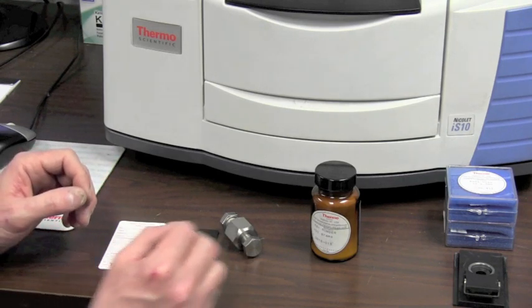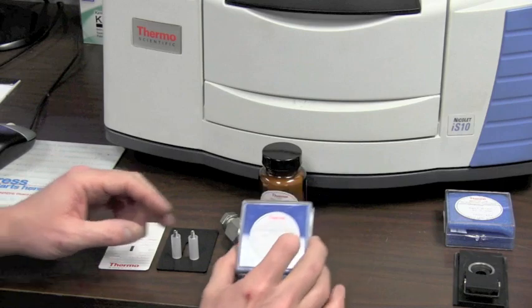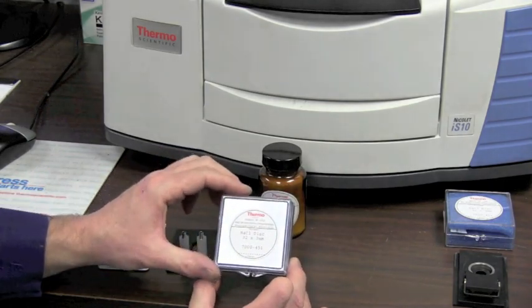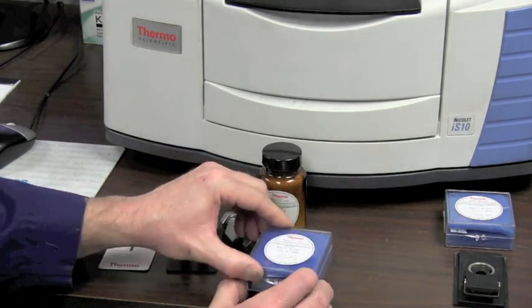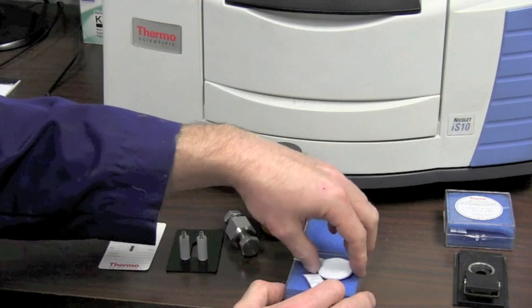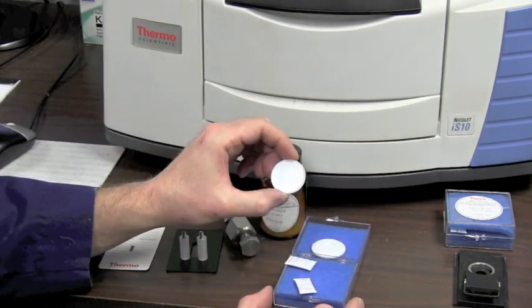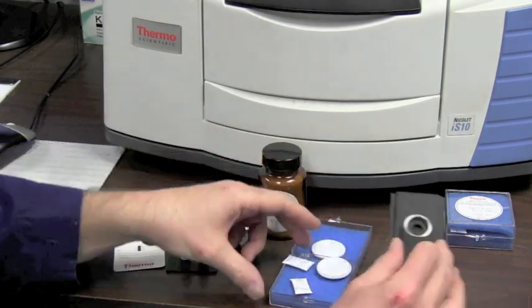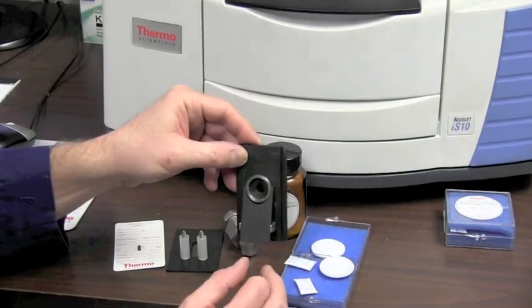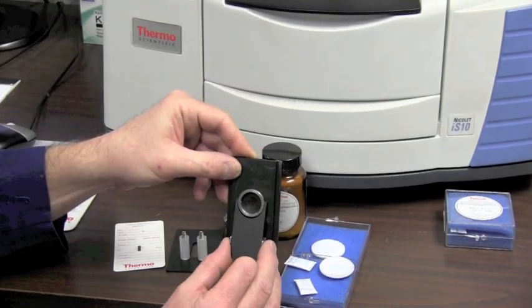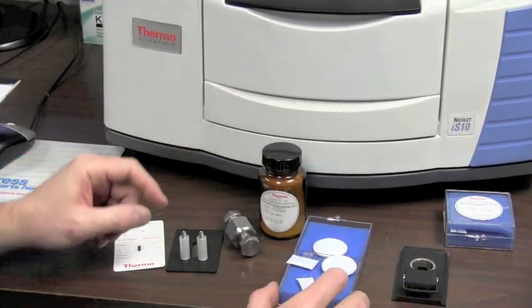We can also do Nujol, which is liquids. They're placed on sodium chloride plates. Put two of them together with the liquid between it and shine the light path through there. Put it in that holder and we can measure that material in liquid form through the glass plates.